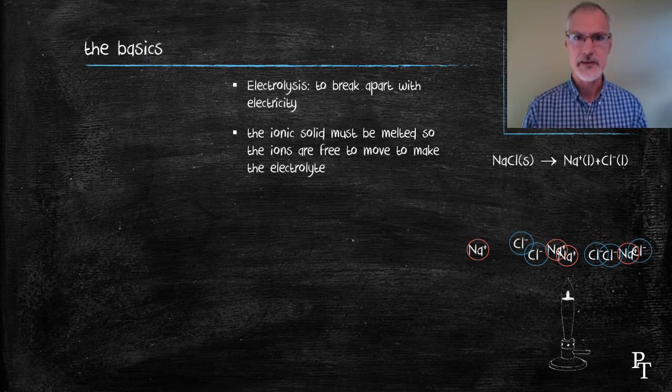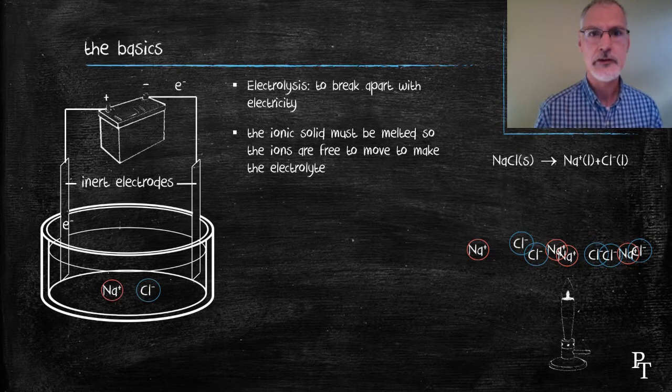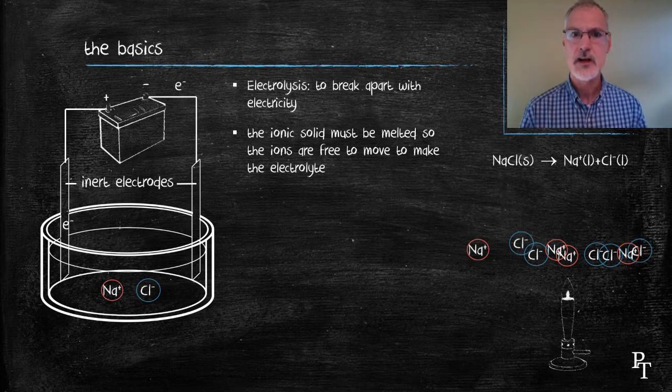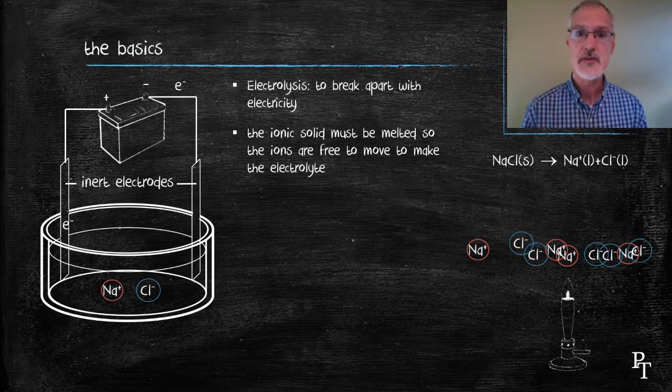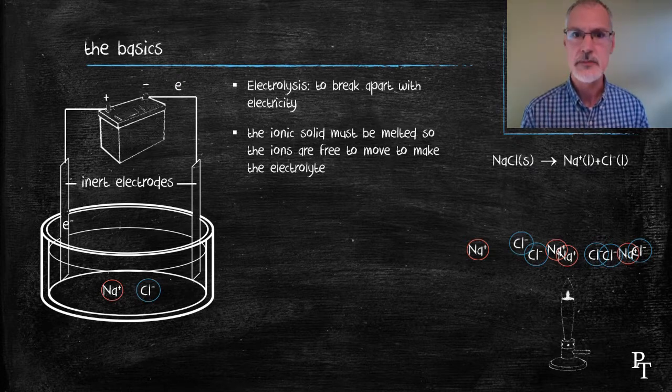Let's look at a few basics about how the cell operates. We have an external source of electrical energy, a battery. We also have a couple of inert electrodes. Remember that this must be done at very high temperatures to ensure that the salt has melted or is molten. So often, platinum might be used or inert carbon electrodes.